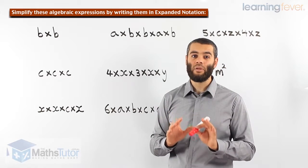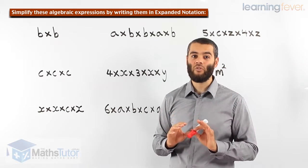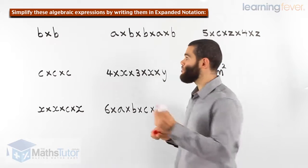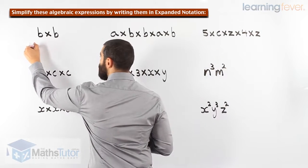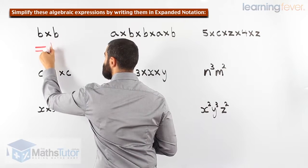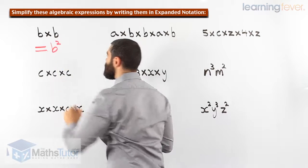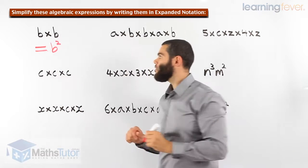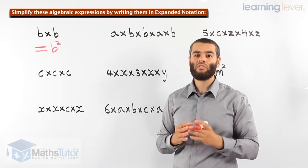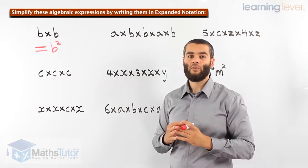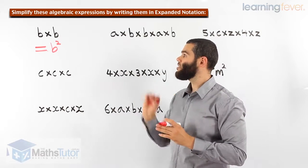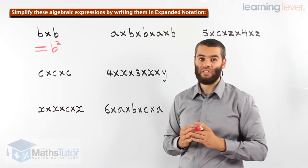They can be written in a short form. Let's see how we can do b times b. Well, b times b is b squared. Like we said, 5 times 5 is 5 squared. In algebra, the pronumerals behave in exactly the same manner — b times b is b squared.